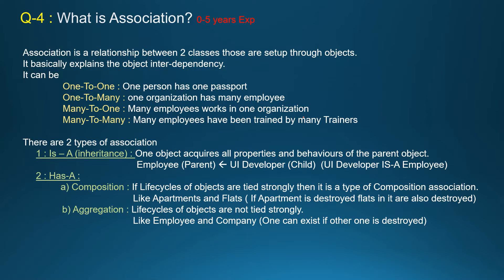What is association? Association is a relationship between two classes set up through objects. It basically explains object interdependency. There are four types of association: one-to-one, one-to-many, many-to-one, and many-to-many. One-to-one: one person can have only one passport. One-to-many: one organization can have many employees. Many-to-one: many employees work in one organization.